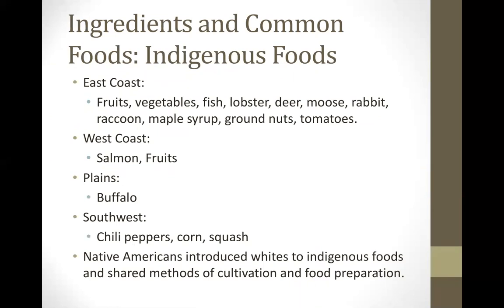Native Americans who lived on the East Coast enjoyed many fresh fruits and vegetables — strawberries, cranberries, currants, grapes, persimmons, plums, beans, corn, and pumpkin. On the West Coast, salmon and fruits were enjoyed. In the Plains region, buffalo was a staple. In the Southwest, chili peppers, corn, and squash were enjoyed. Almost all populations shared three staple crops: beans, corn, and squash.